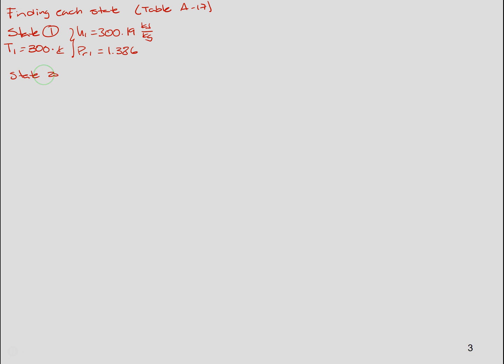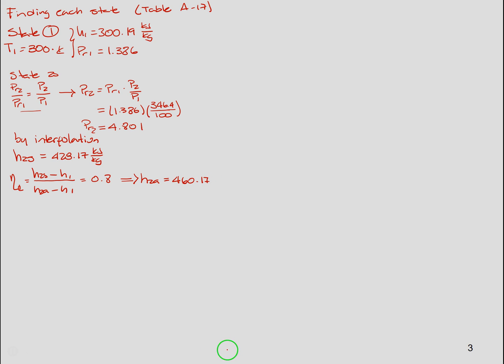Now to get state 2s, we use the isentropic process. We solve for PR2, so PR2 is 4.801. By interpolation we can find h2s equal to 428.17 kilojoules per kilogram. Now since we have an isentropic efficiency of the compressor, it can be defined as h2s minus h1 over h2a minus h1 equal to 0.8. Solving this, we can get h2a of 460.17 kilojoules per kilogram.